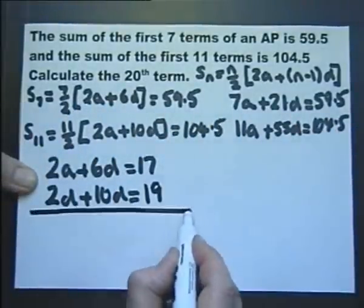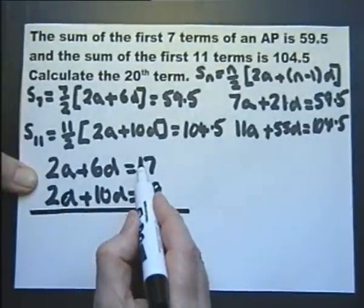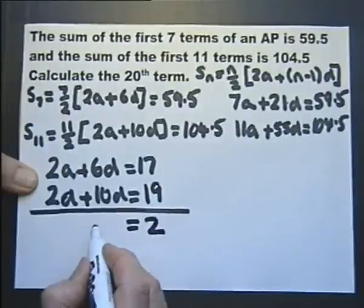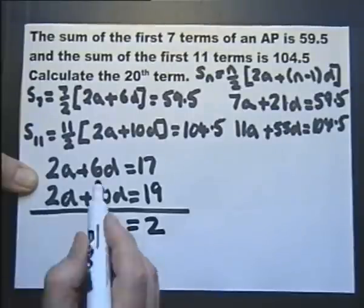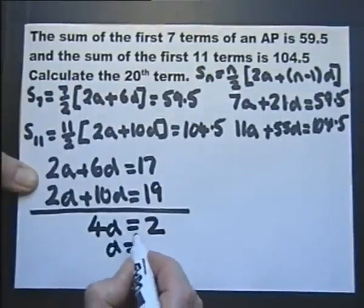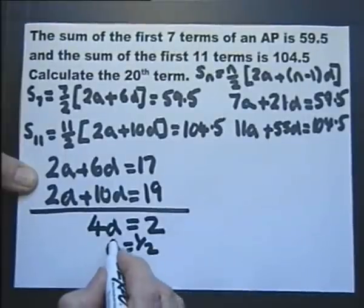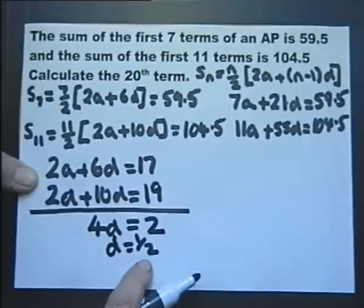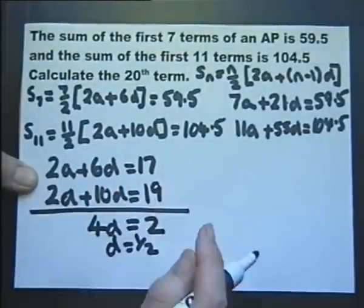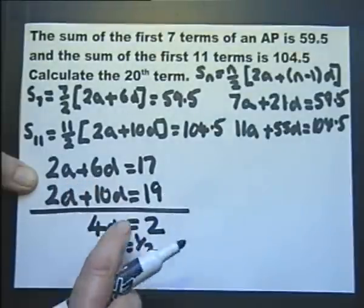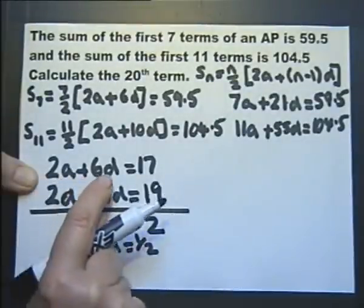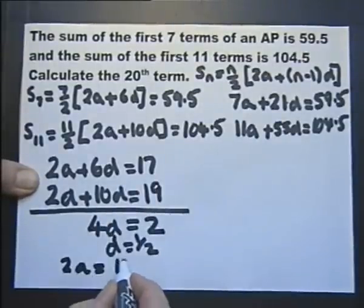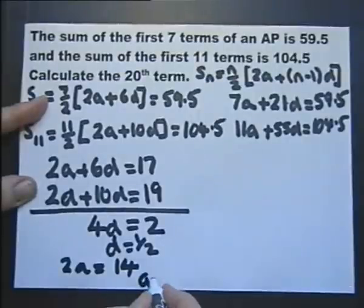Subtracting the first simplified equation from the second: (2A plus 10D) minus (2A plus 6D) gives 19 minus 17. The 2A terms cancel, leaving 4D equals 2, so D equals one half. The common difference is one half. Substituting back into the top equation: 2A plus 6 times one half equals 17, so 2A plus 3 equals 17, giving 2A equals 14, and therefore A equals 7.